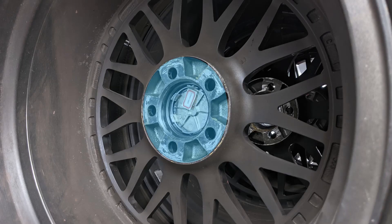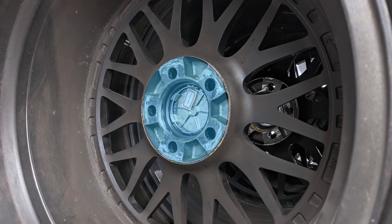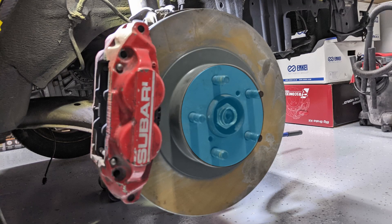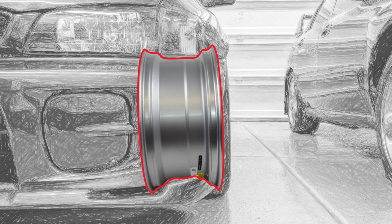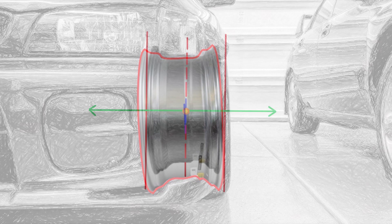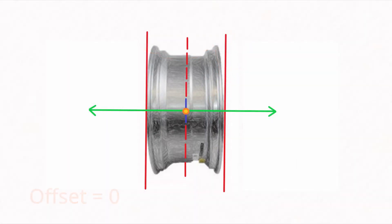The wheel offset is determined by this surface. This is where the wheel mounts to the car, specifically the hub. When I look at the wheel from this perspective, this is where the surface is.